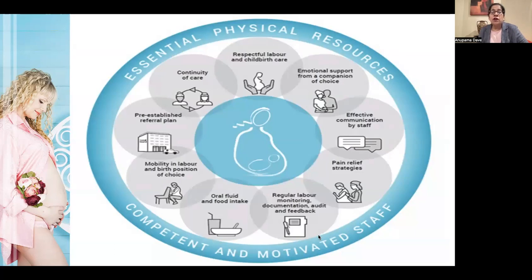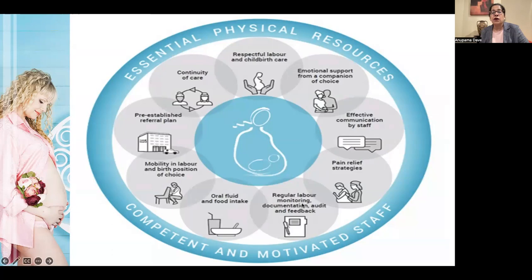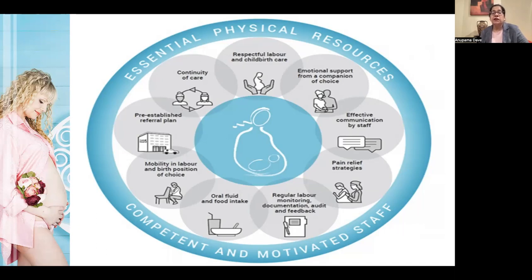For appropriate labor monitoring, the essential resources required include: respectful labor and childbirth care, emotional support from a companion of choice, effective communication by staff, pain relief strategies, regular labor monitoring, documentation, audit and feedback, oral fluid and food intake, mobility in labor and birth position of choice, a pre-established referral plan, and continuity of care — all made possible by this advanced labor care guide in addition to competent and motivated staff.